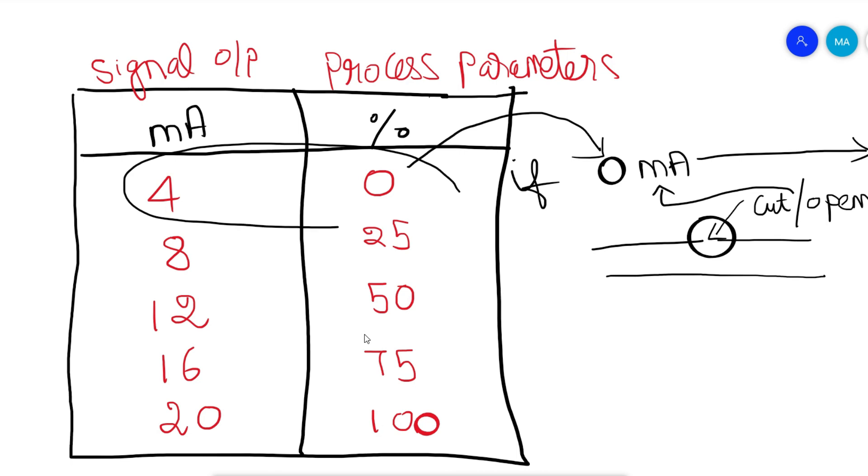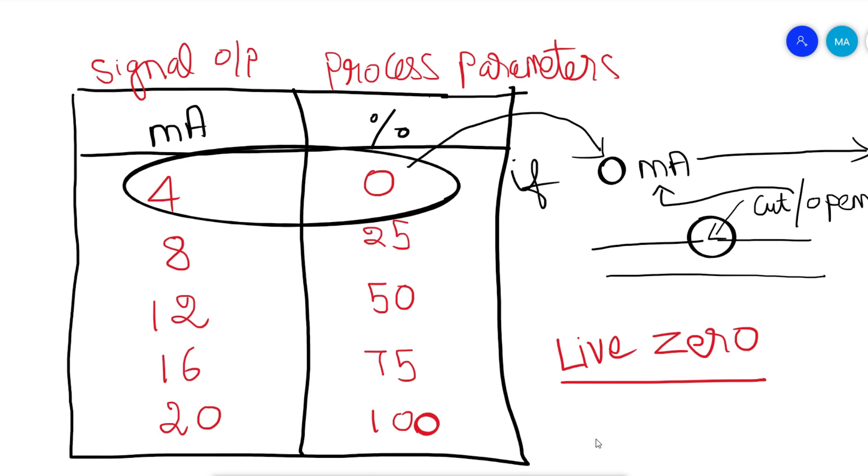This is called the live zero concept. It is easy to detect if the signal wire is broken. With zero milliamps, we would be unable to identify whether that is a signal or a wire break. This is the main reason to use 4 to 20 milliamps signal - the live zero concept.